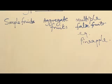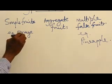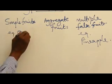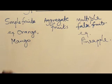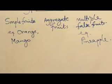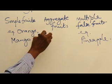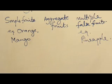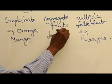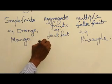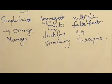Examples of simple fruits include orange, mango, and purple can also be a simple fruit. Then we have jackfruit, and the earth berry — these constitute aggregate fruits.